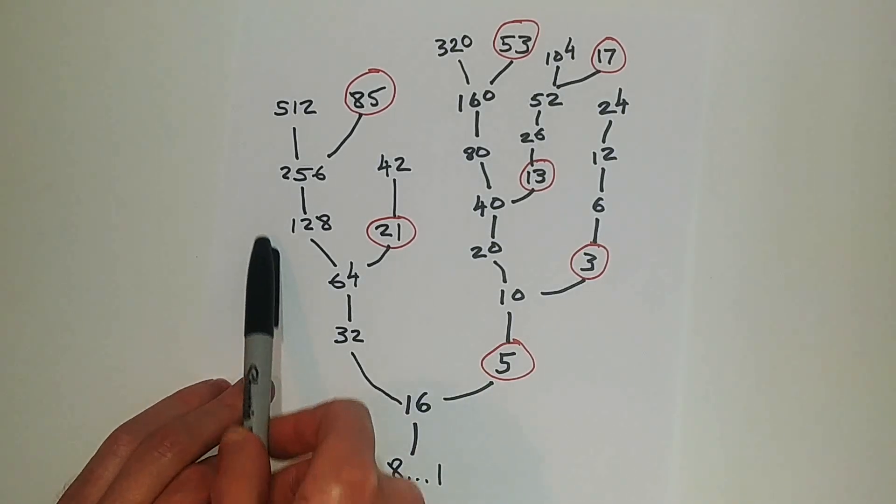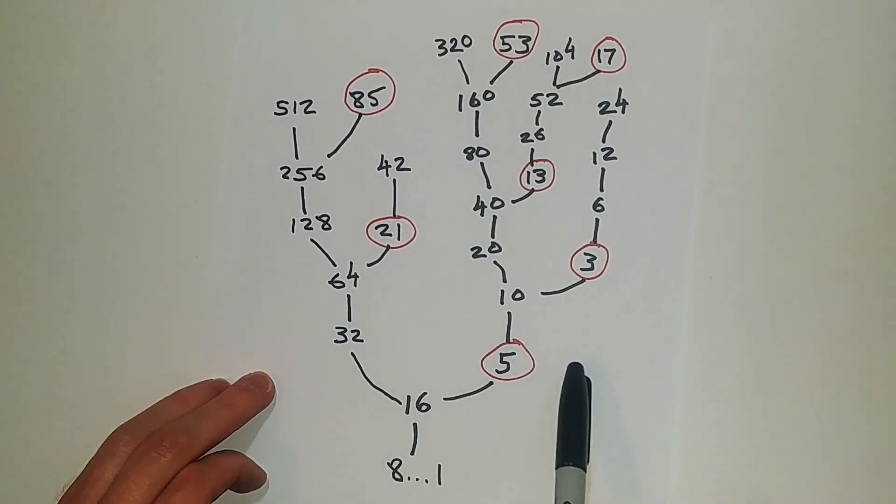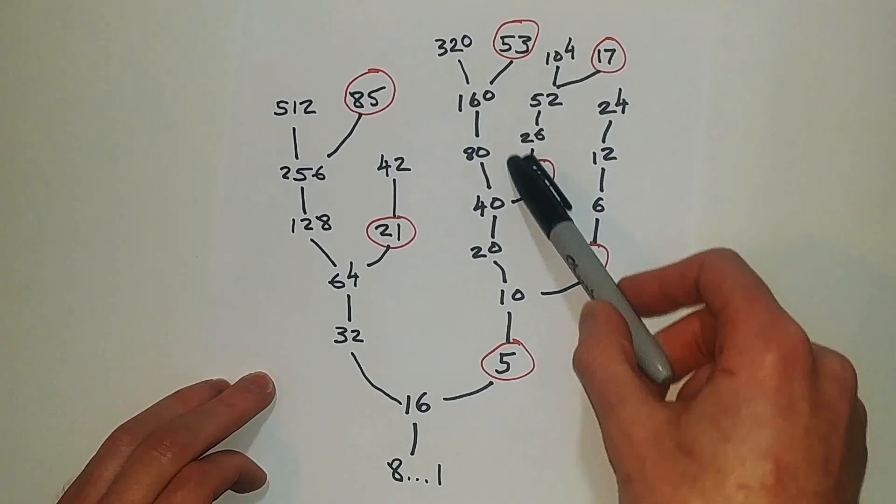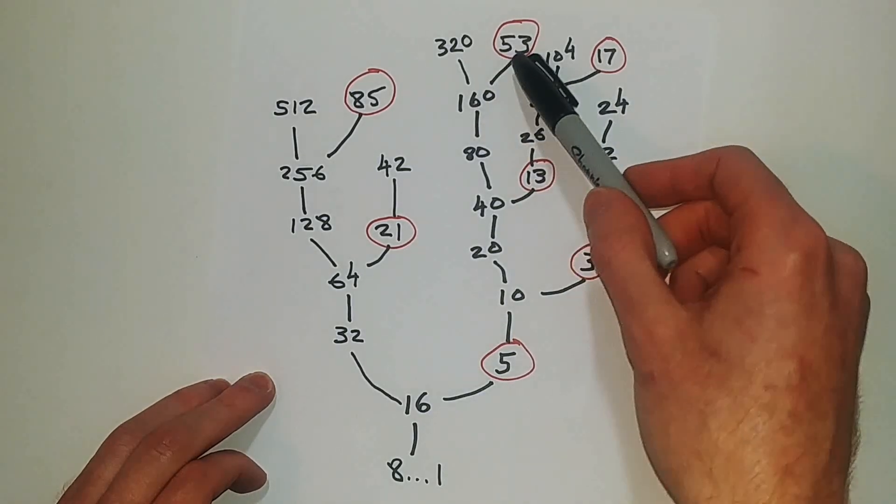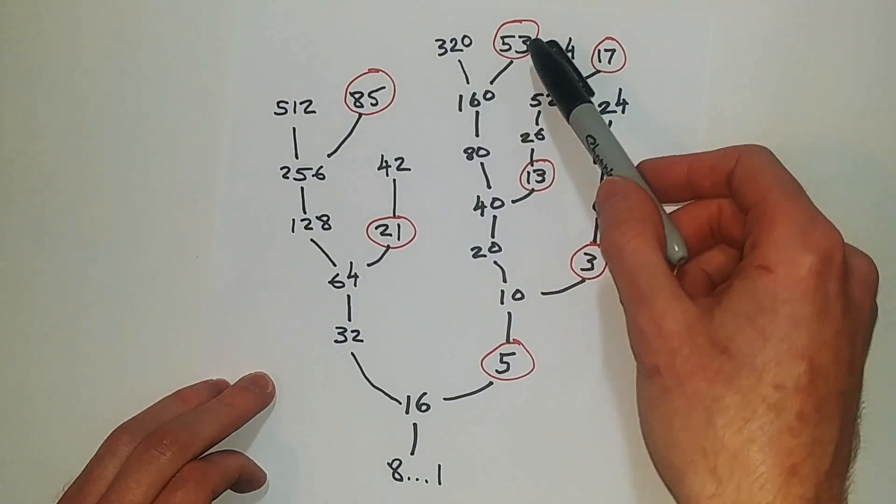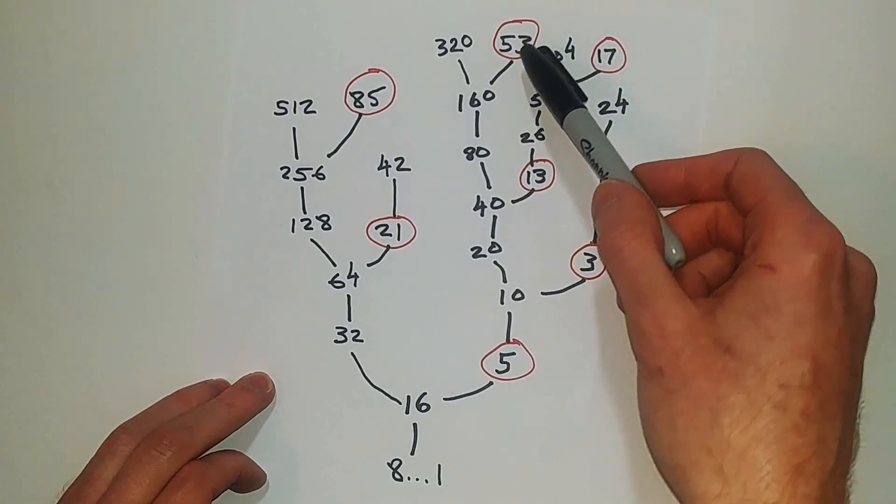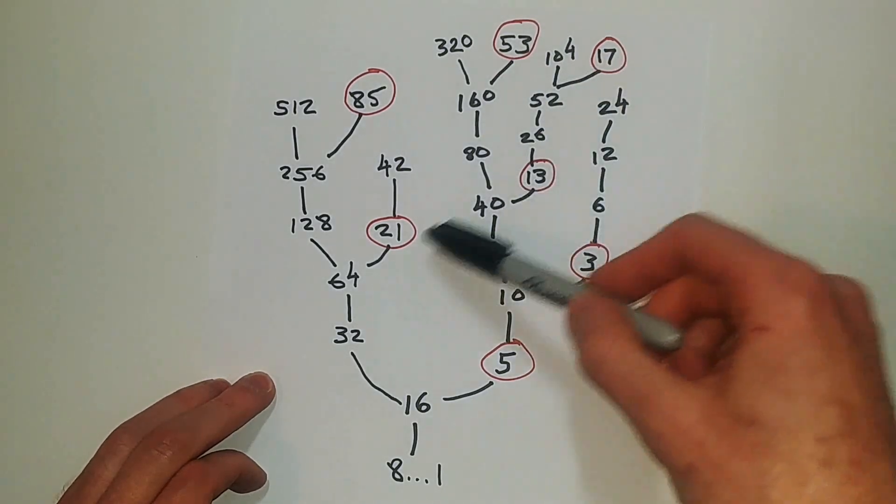One thing we can notice about this tree is, for instance, we have all square numbers over here, and we can see that all odd numbers produce an infinite vine of even numbers. So we can see that it's pretty trivial to see how an even number is connected to the tree, because we just keep dividing by 2 and we'll eventually get to an odd number.